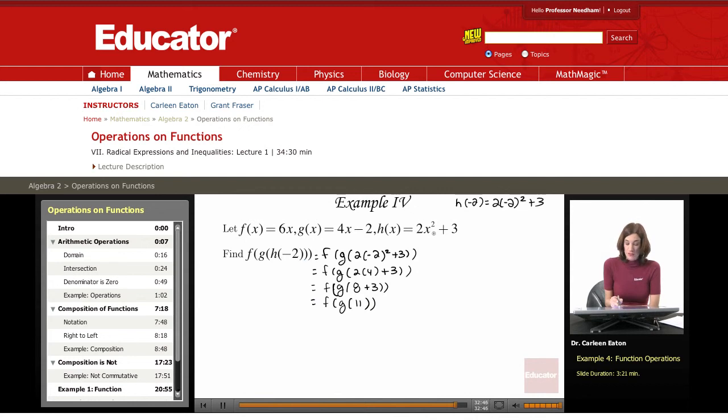So starting from the right, I evaluated h for negative two. That gave me 11. Now this is a member of the range of h, and it's also an element of the domain of g because I'm plugging it in here as an input value. So now I need to find g of 11.